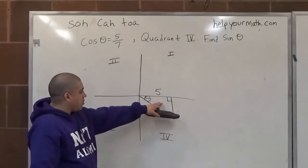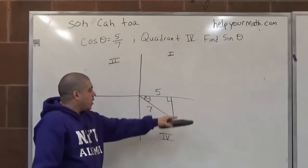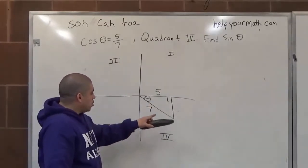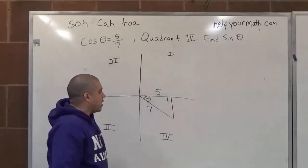Now, because this is a right triangle, we can use the Pythagorean theorem to find this side right here.